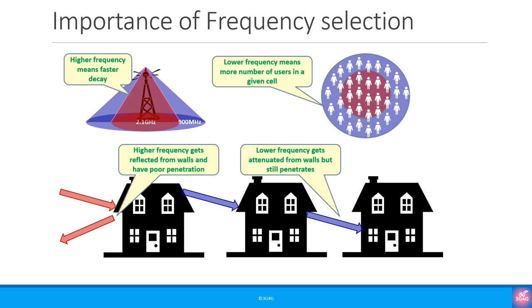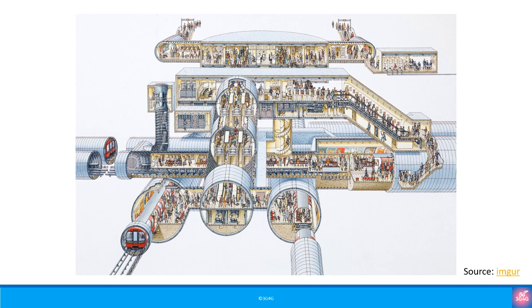This slide is from our most popular video on radio frequency band and spectrum — do check it out if you are not very familiar with the concept of frequency and spectrum. What it is effectively saying is that for lower frequency, the signal goes much further and is able to penetrate through walls, but higher frequency doesn't go very far and is not able to penetrate through walls. Having said this, there is still a limitation on how far an RF signal can go. If we look at one of the cross sections of London Underground, you will see that the stations and the tube is far below the surface — there is no way an RF signal can travel this far from the street above.